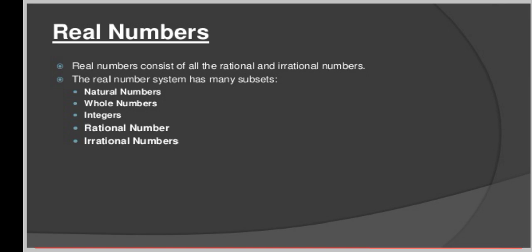Natural numbers are the numbers which begin from one to infinity. Whole numbers are the numbers which begin with zero to infinity. Integers consist of zero, negative numbers, as well as positive numbers. Rational numbers are the numbers which can be represented in the form P/Q where Q is not equal to zero. Irrational numbers are the numbers which cannot be written in that form — for example, √3, √5, √7 are examples of irrational numbers. Irrational numbers are non-terminating and non-recurring.